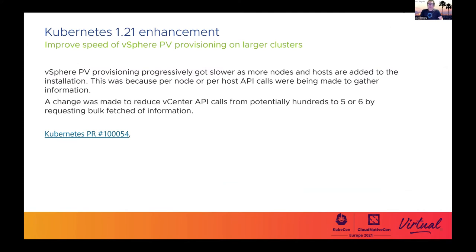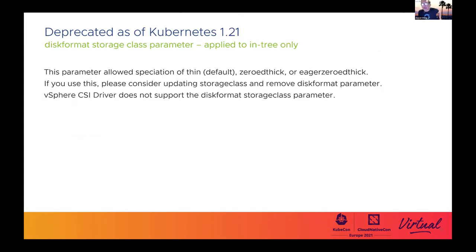The first item is a speed improvement when you provision persistent volumes. This is more likely to be apparent when you run large clusters — meaning many Kubernetes cluster VMs or when you're running on many ESXi hosts. Next is a deprecation warning on the disk format option, which has only been supported in the in-tree storage provider anyway — a deprecated feature inside a deprecated driver. Probably won't affect most people, but worth noting.